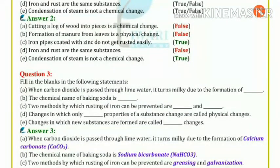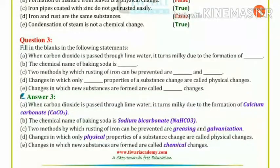Iron and rust are the same substance - false. Rust is Fe2O3, iron oxide, which forms through a chemical change. Condensation of steam is not a chemical change - true.